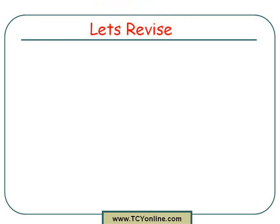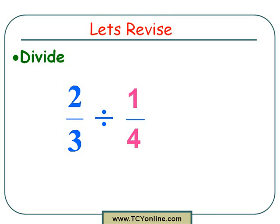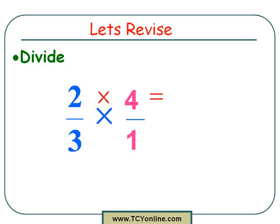Now let's revise this quickly again with another example. We need to divide 2 over 3 by 1 over 4. First, change the division sign to multiplication and invert the second fraction — so 1 over 4 becomes 4 over 1. Now multiply the two numerators: 2 times 4 gives 8. Multiply the two denominators: 3 times 1 gives 3. So the final answer is 8 over 3. This can't be reduced further, so the answer is 8 over 3.